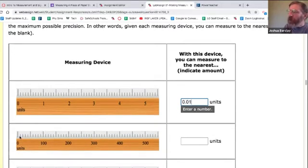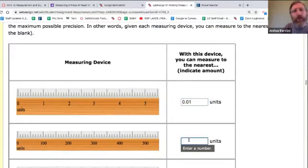These marks, what are these small marks? Each one of those is 10. How many units could we estimate to? What place? What place could we estimate to, folks? If the marks are every 10, we can estimate to the one's place.